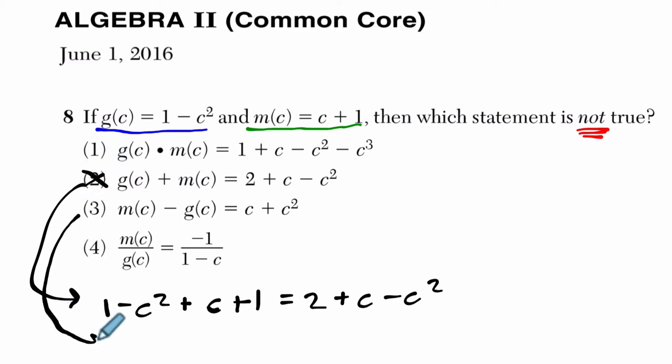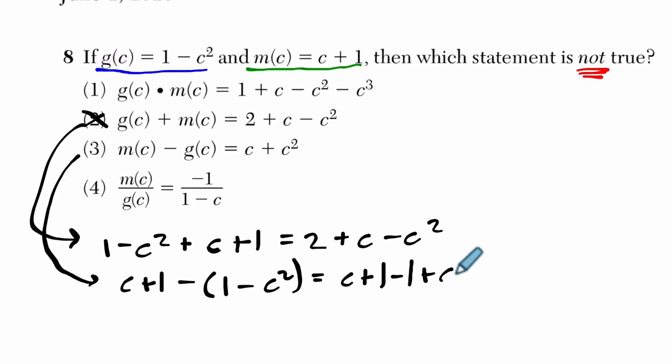Then in the third choice, I can subtract quickly. We have c plus 1 minus 1 minus c squared. Notice I put that in parentheses here. So we have c plus 1, and we're subtracting the 1, and we're subtracting the negative c squared, so it's plus c squared. And what's that? Well, it's going to be 1 minus 1 is 0, and then we have c plus c squared, which is what they have as well. So we've already eliminated two choices.